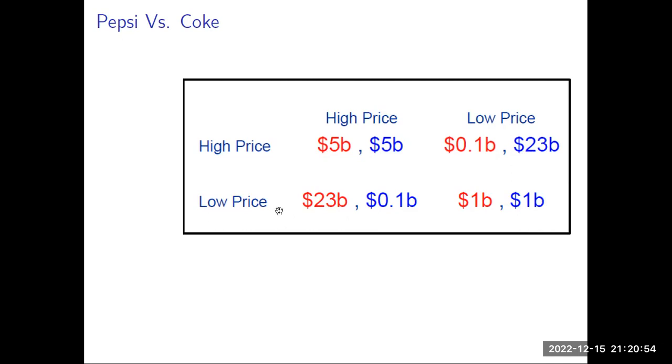Similarly, in another example, if one company lowers the price but the other keeps prices high, the company that keeps its prices high will have just a profit of $0.1 billion, whereas the firm that decreases the price will be making $23 billion. But if they both lower the price, they will be having $1 billion.